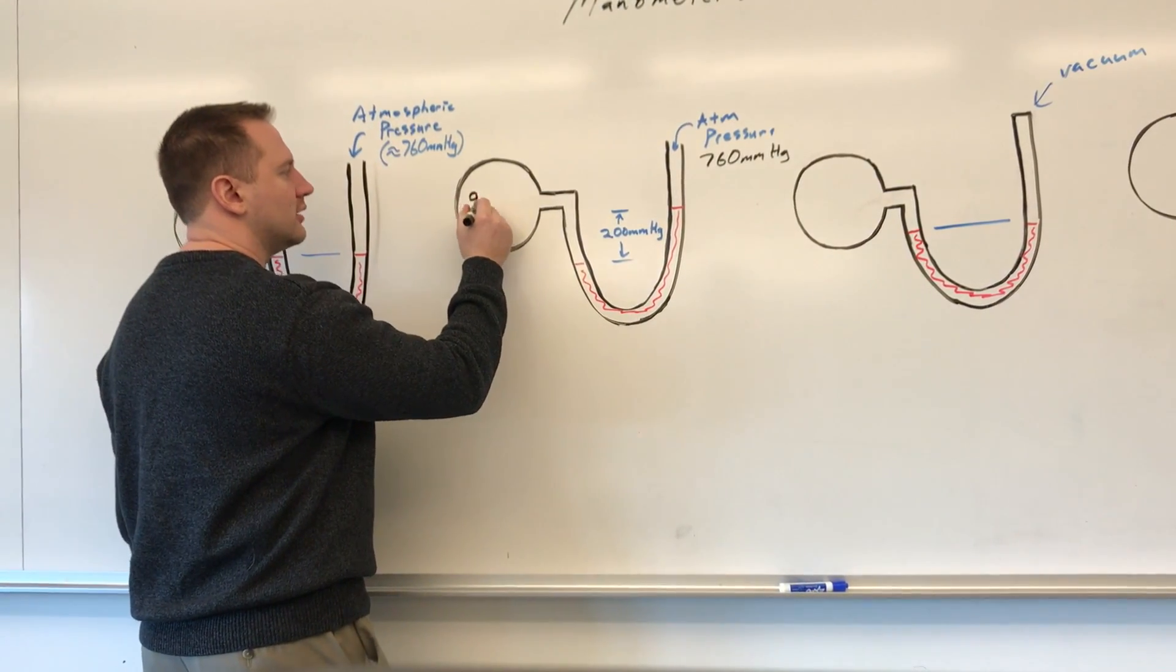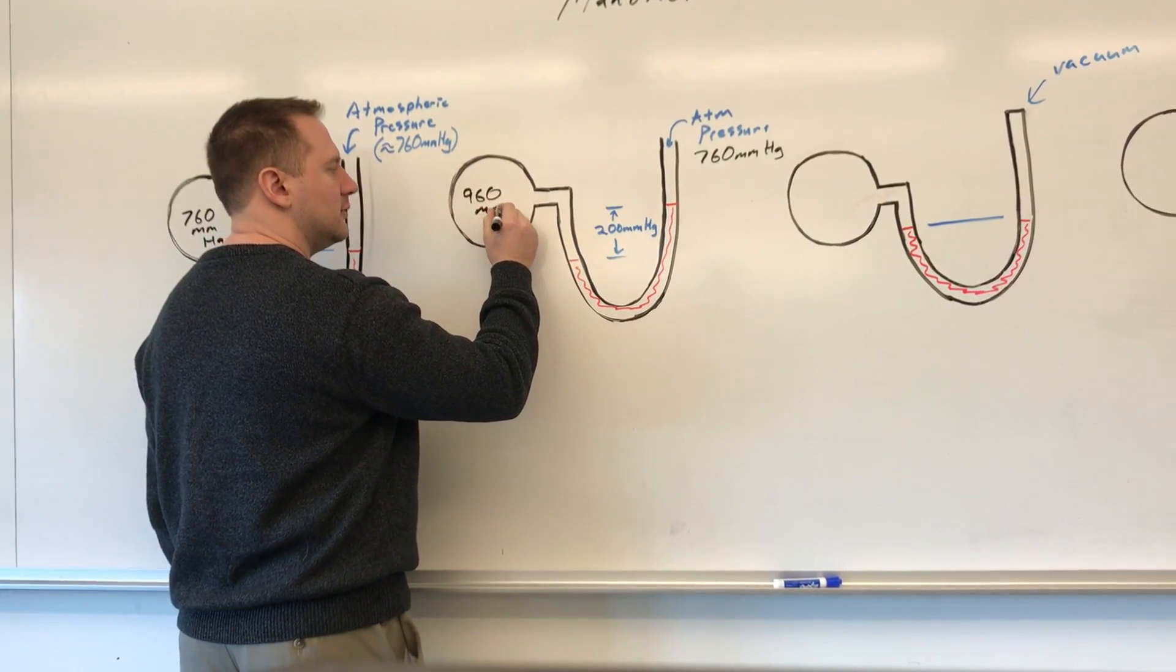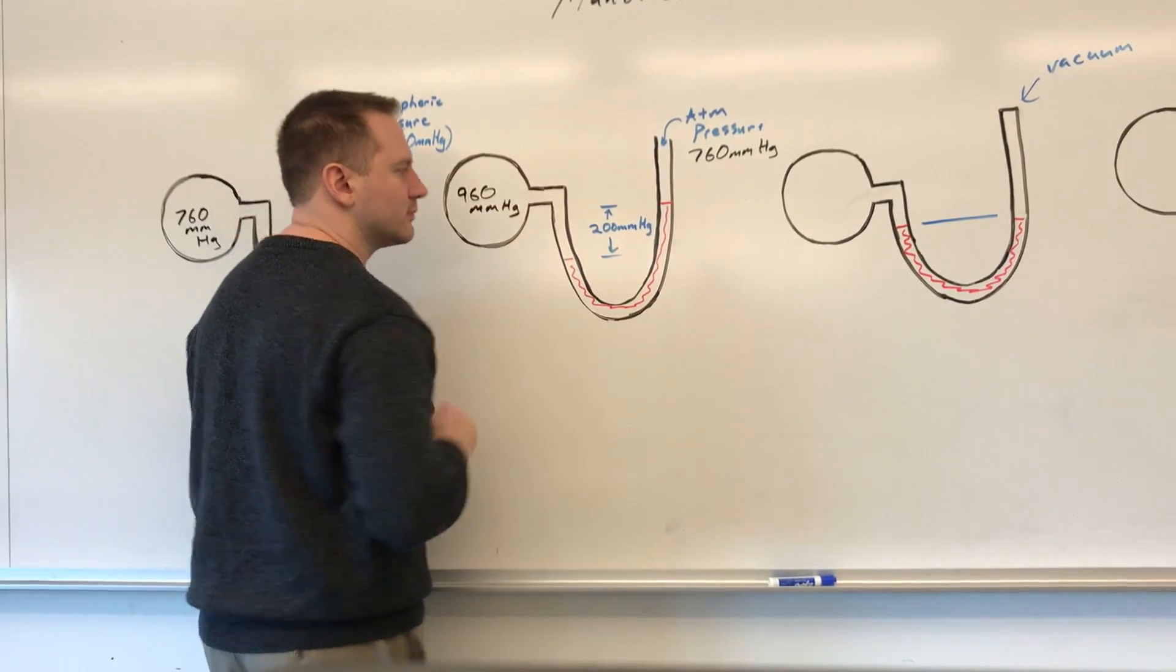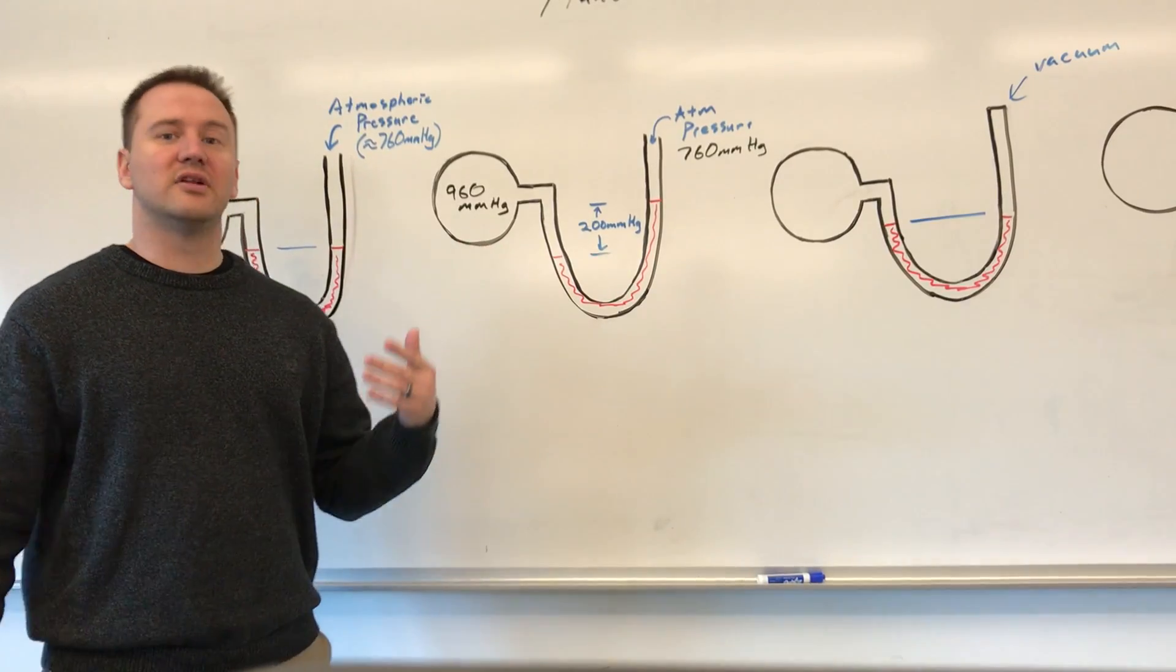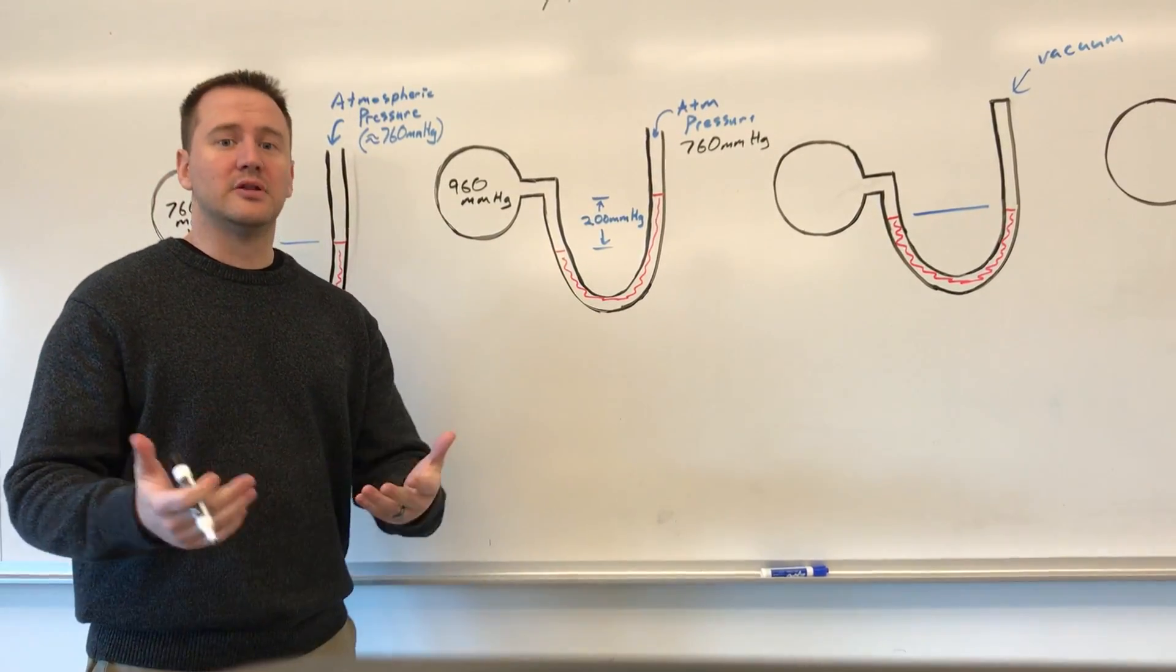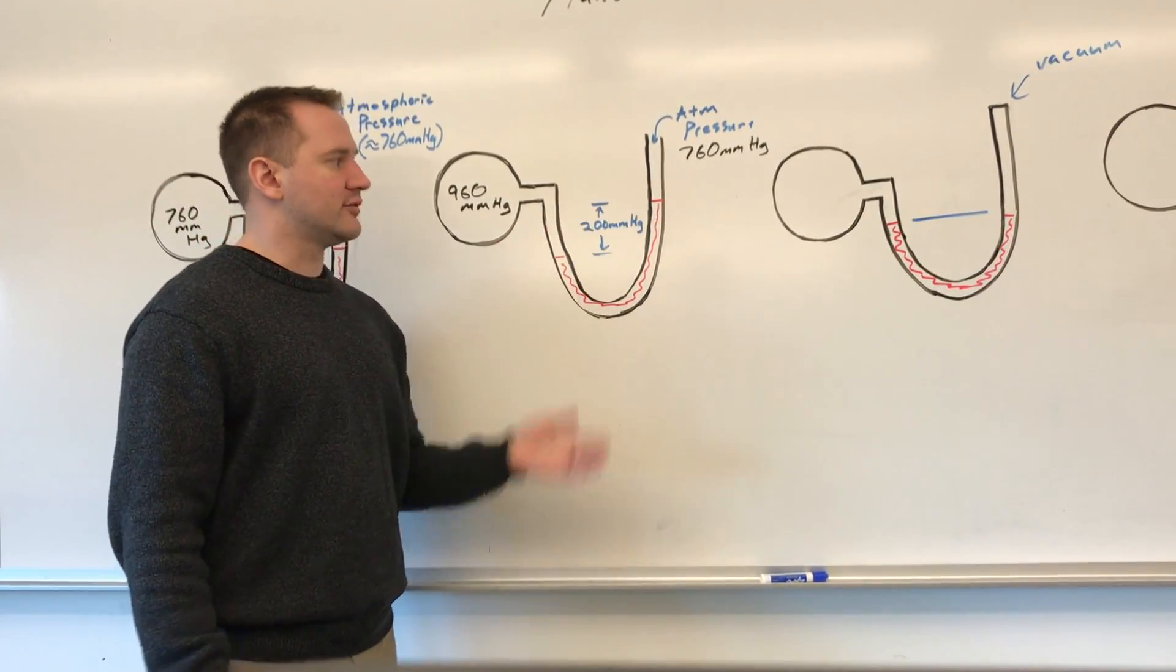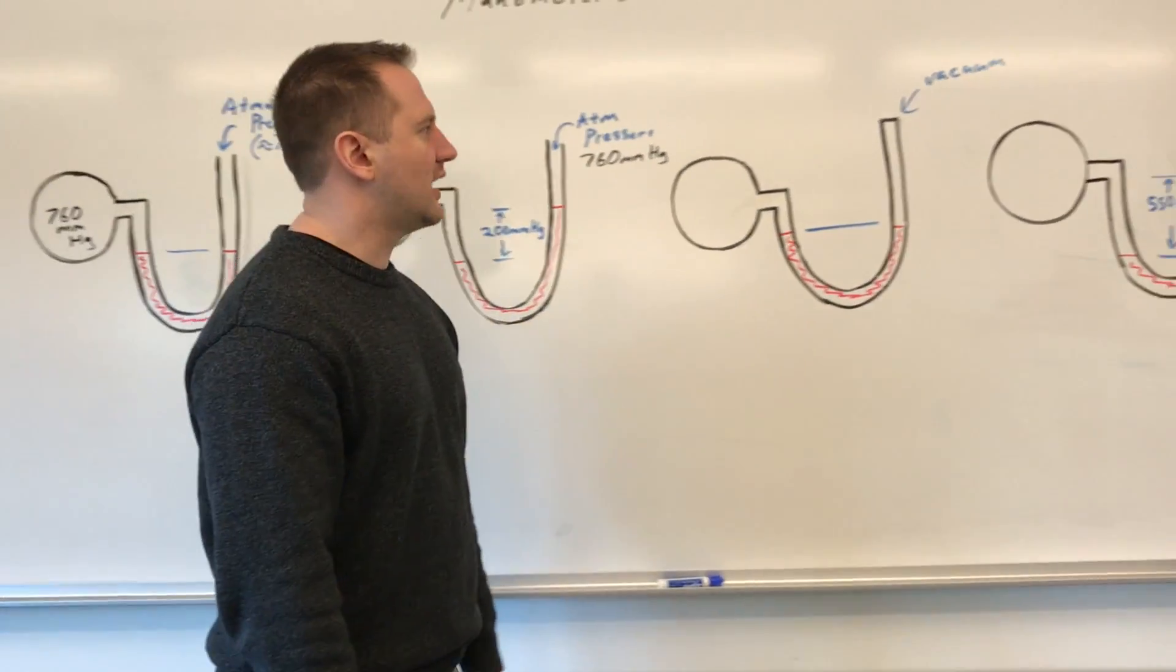So we could say that the pressure inside of here is 960 millimeters of mercury. If the mercury shifted the other way, we would have a lower pressure than what is outside. But either way, we look at the difference between the levels to determine the difference in pressure being applied to each side.